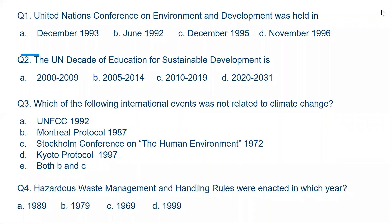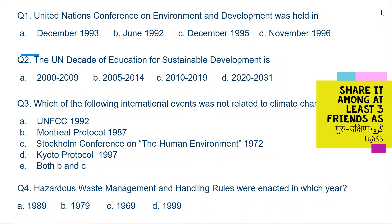Question number one. United Nations Conference on Environment and Development was held in which year? Options: A) December 1993, B) June 1992, C) December 1995, or D) November 1996. The correct answer is B, June 1992.